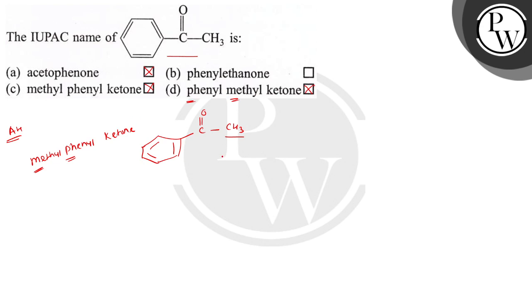Now, the IUPAC name of this is - this is 1 and this is 2. This is a ketone, and there are 2 carbons, therefore it is Ethanone.